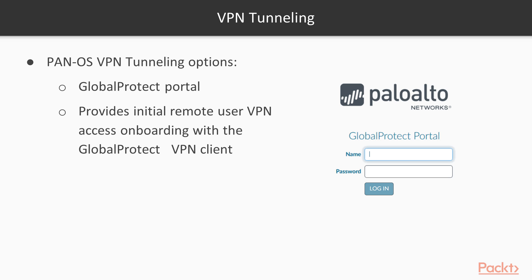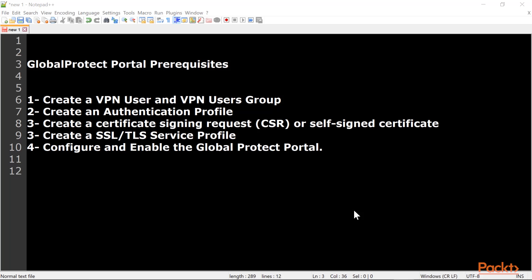To enable the GlobalProtect portal, we need to configure some prerequisites. We need to create a local VPN user and a VPN users group — any member added to that group will be allowed remote access VPN. We then need to create an authentication profile, which selects the type of authentication used on the portal. We can point our VPN users group as the group allowed to access the portal.